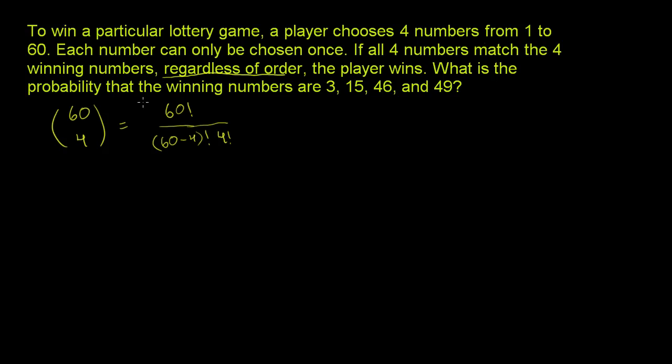But what this is really saying, this part right here, 60 factorial divided by 60 minus 4 factorial, that's just 60 times 59 times 58 times 57. And if you think about it, the first number you pick, there's one of 60 numbers, but then that number's out of the game, then you can pick from one of 59, then from one of 58, then of one of 57. So if you cared about order, this is the number of permutations you could pick four items out of 60 without replacing them.